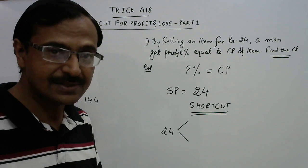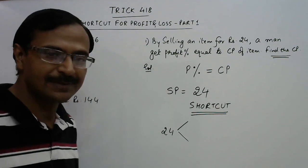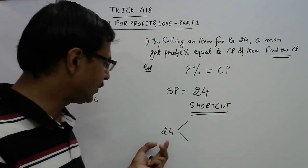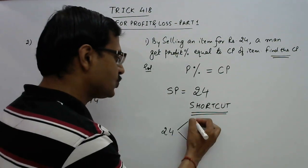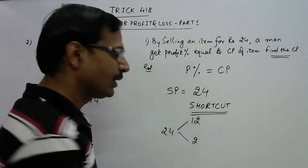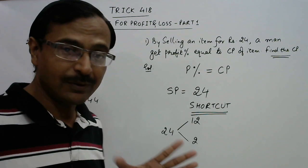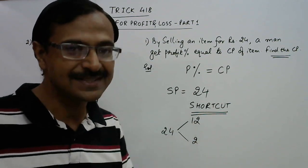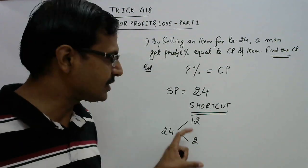You have to just think of two numbers whose product is 24 and whose difference is always 10. So what are the two numbers? If you make the factors of 24 you will find that 12 and 2 are the two factors. 12 into 2 is 24 and what is the difference of 12 and 2? It is 10.